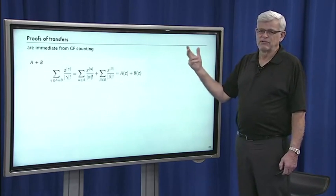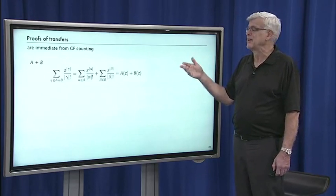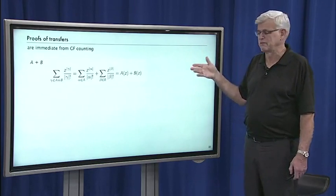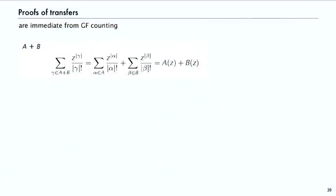Here's the proof of the transfer theorems — I'm not going to dwell on these; they're quite straightforward and very similar to what we did for unlabeled classes in the last lecture. For disjoint union: if you want the EGF for A plus B, and there's an item in A plus B, then there's a term z to the size of that item over that size factorial. That item had to come from either A or B, so we separate the terms into A's and B's, and that's just A(z) plus B(z).